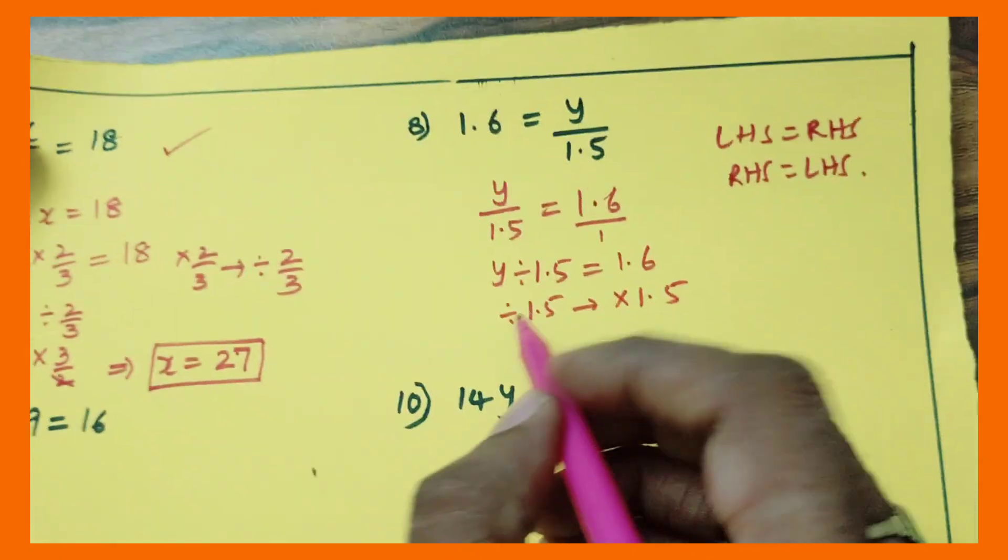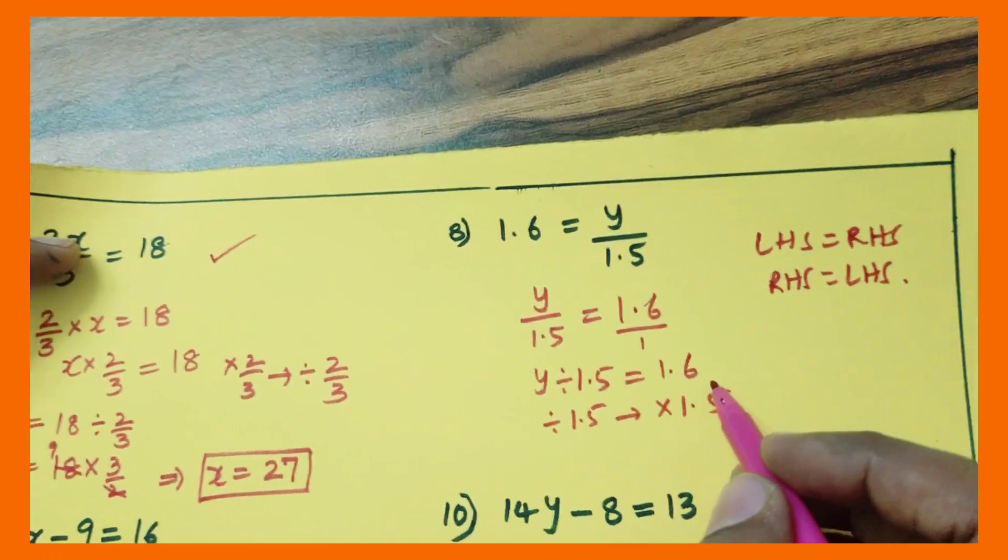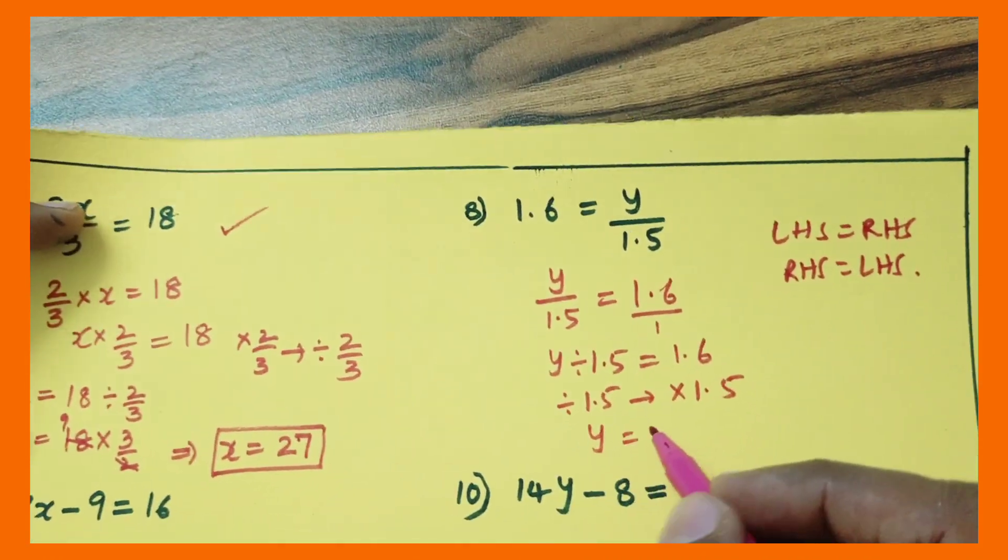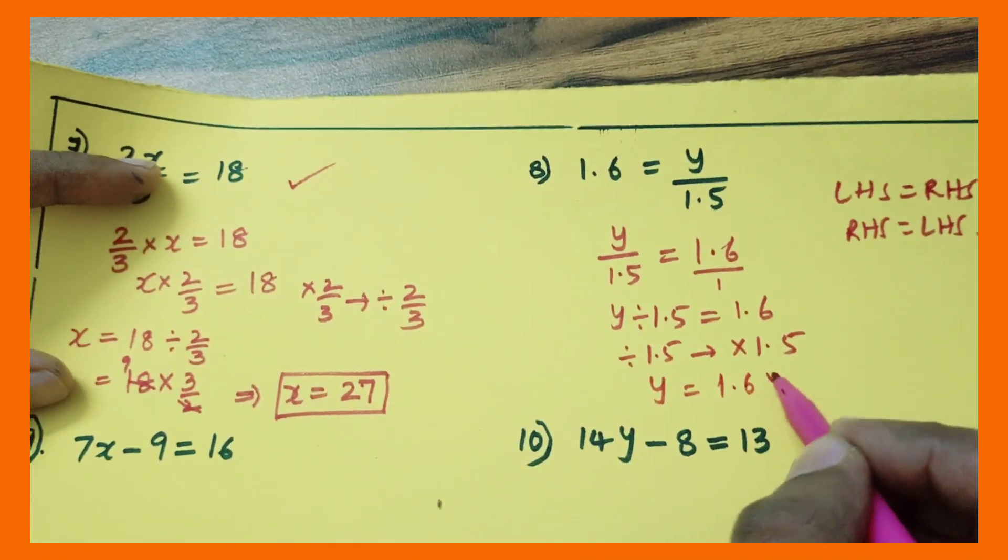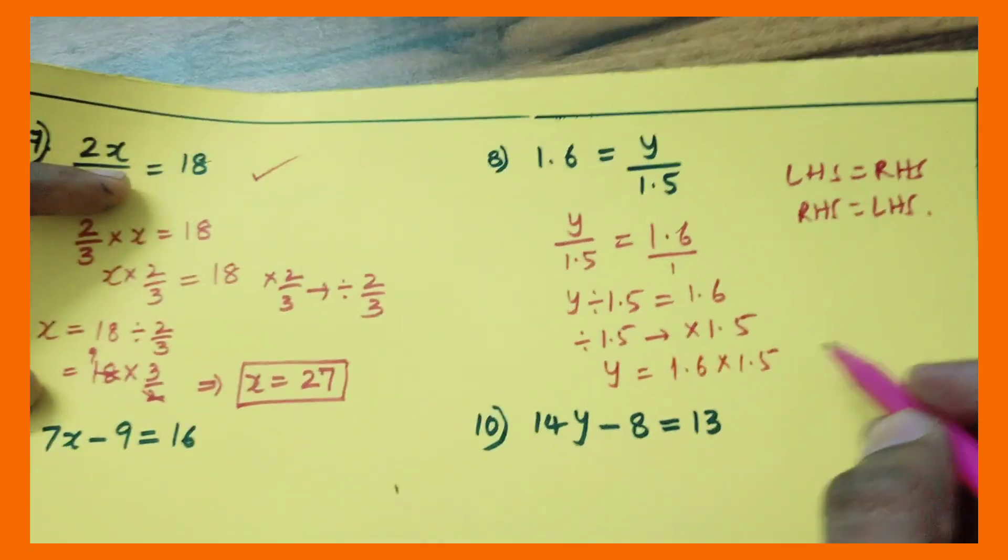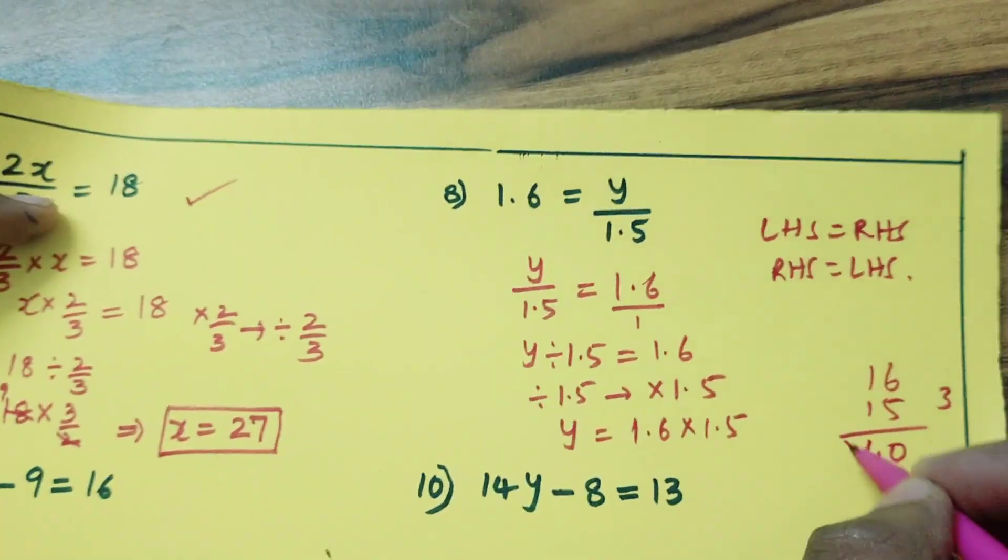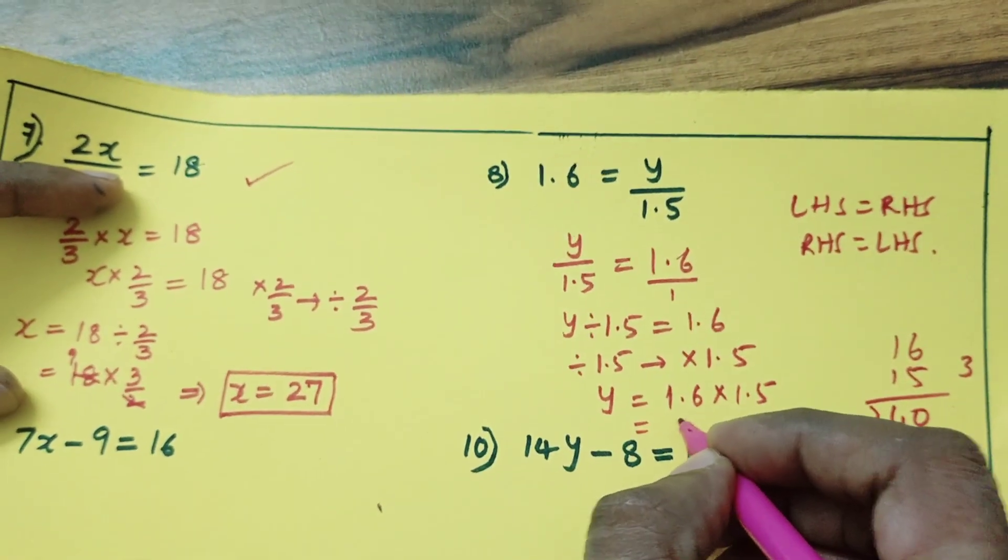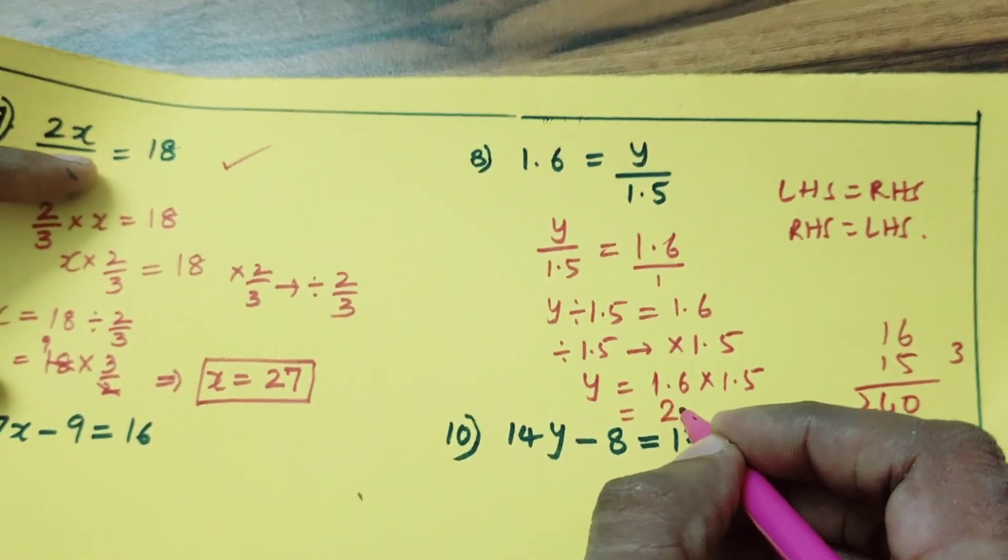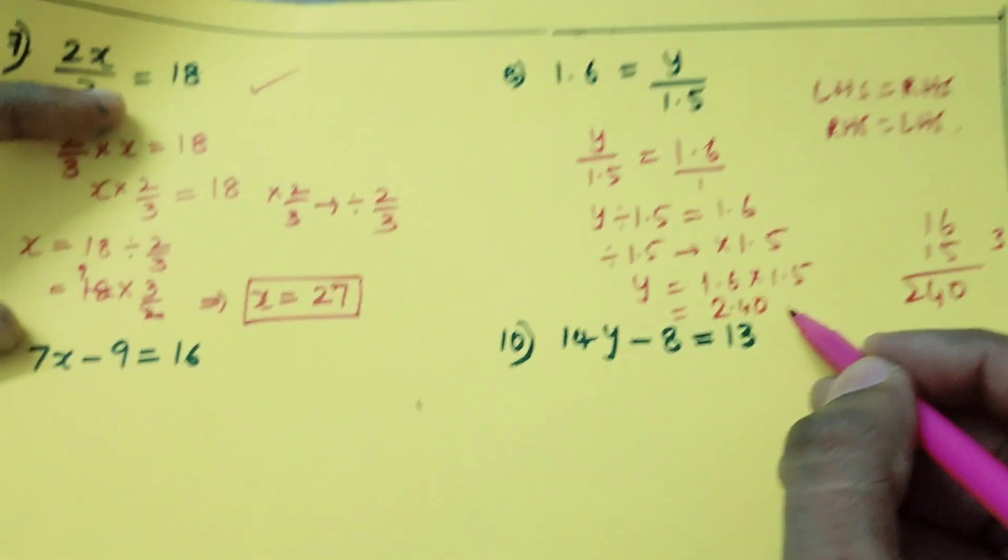If it is transposed to the RHS, now I can write y is equal to 1.6 into 1.5. So you can multiply this - it is going to become 2.4. So this is the solution.